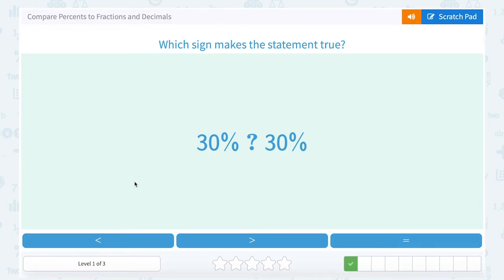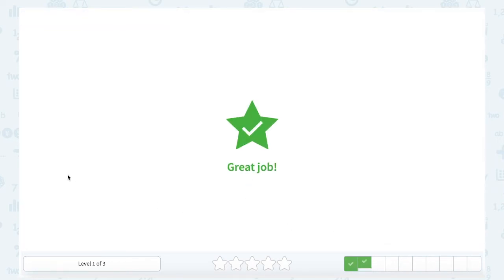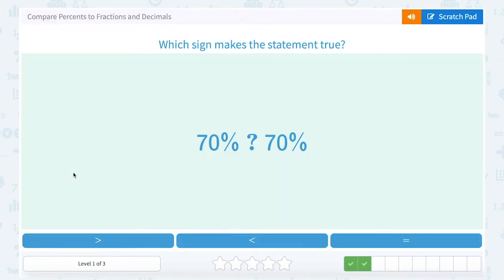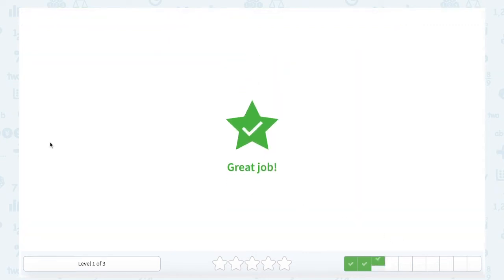Which sign makes a statement true? 30% and 30%. Well, again, they're the same number, so equal. 70% and 70% are the same number, they are equal.